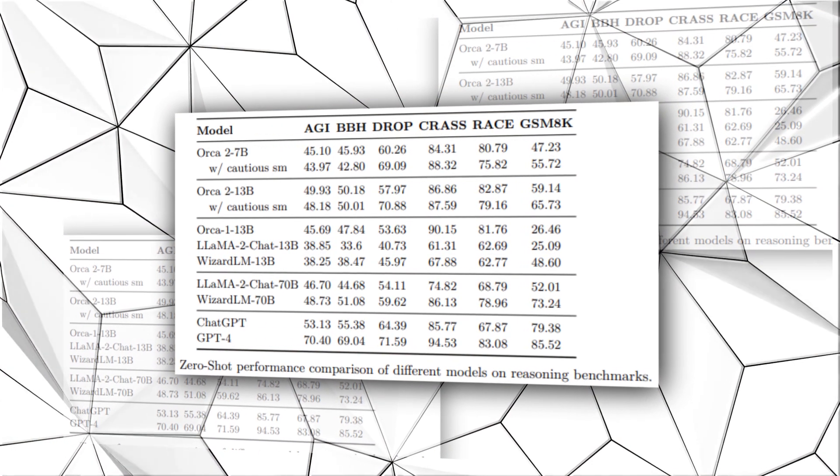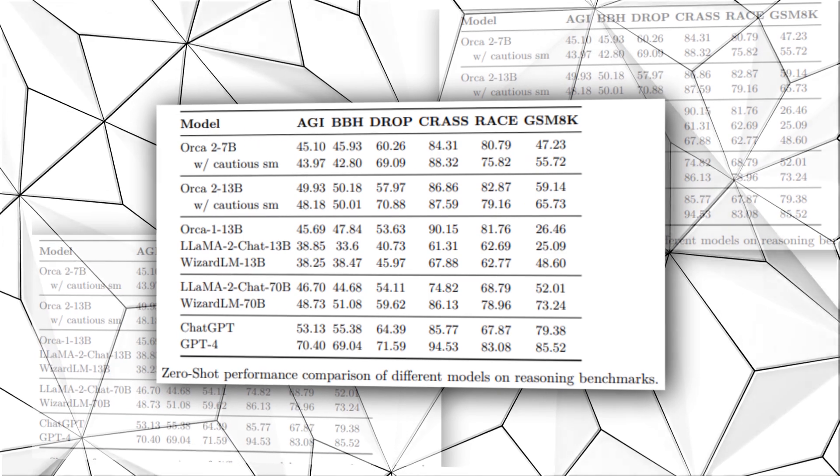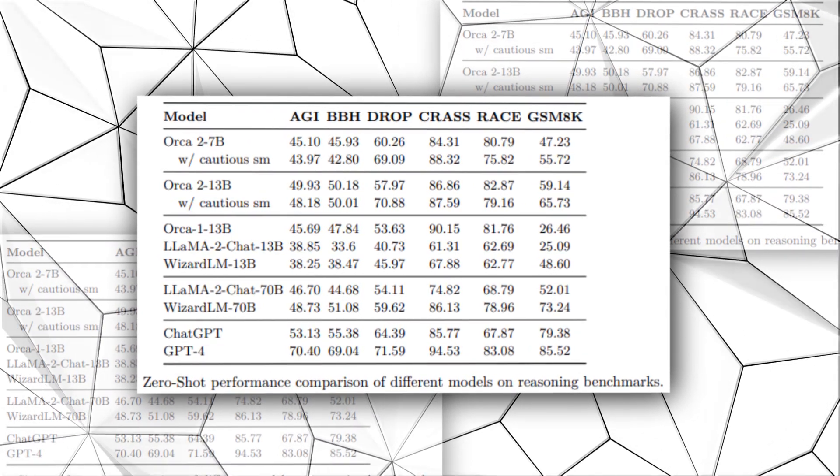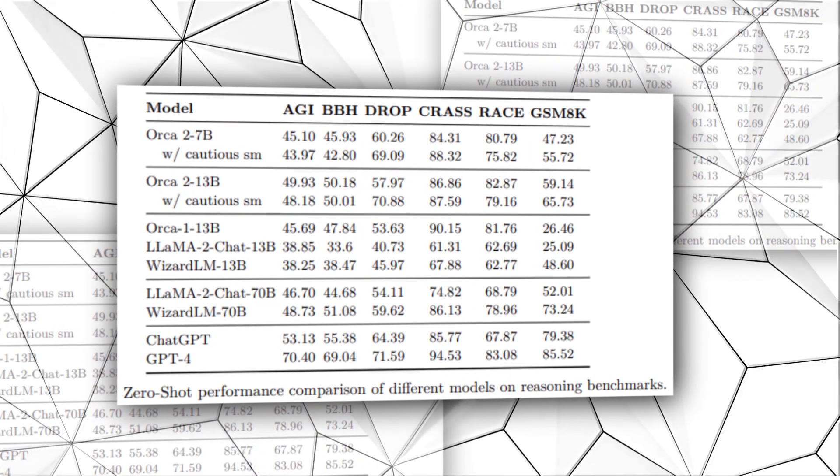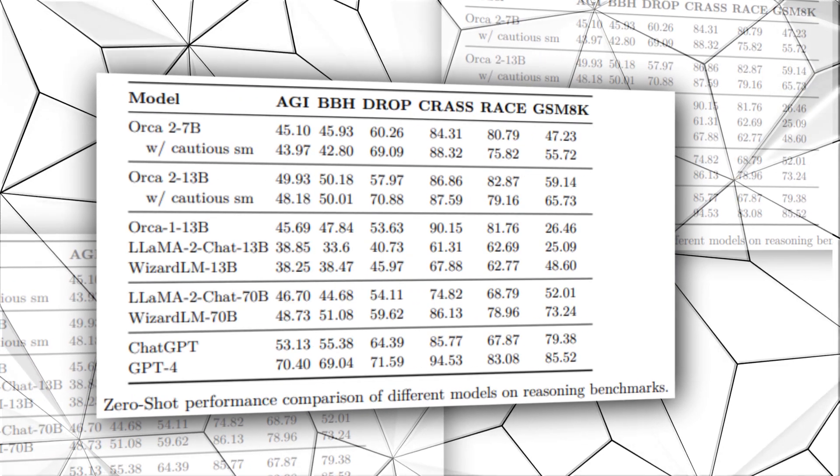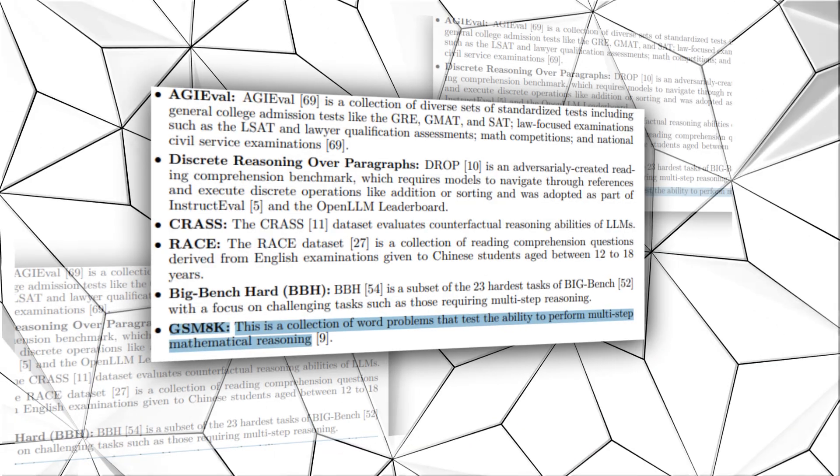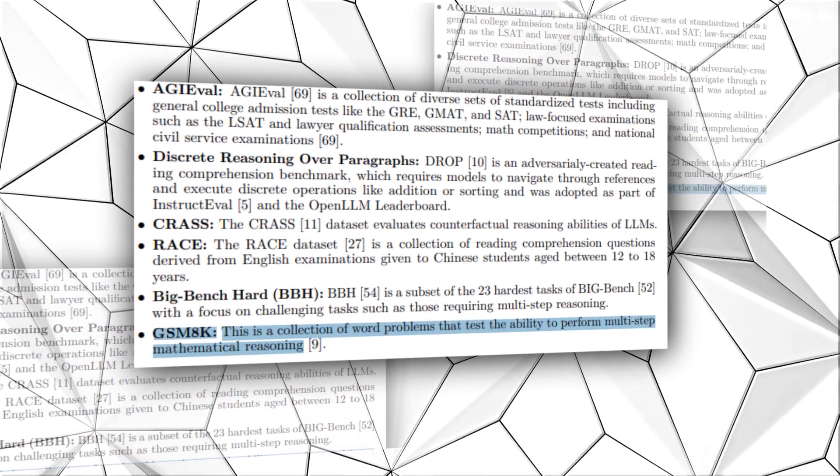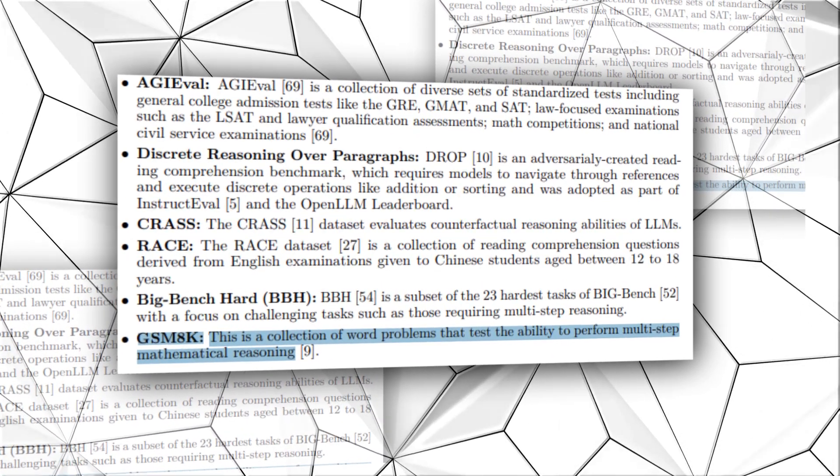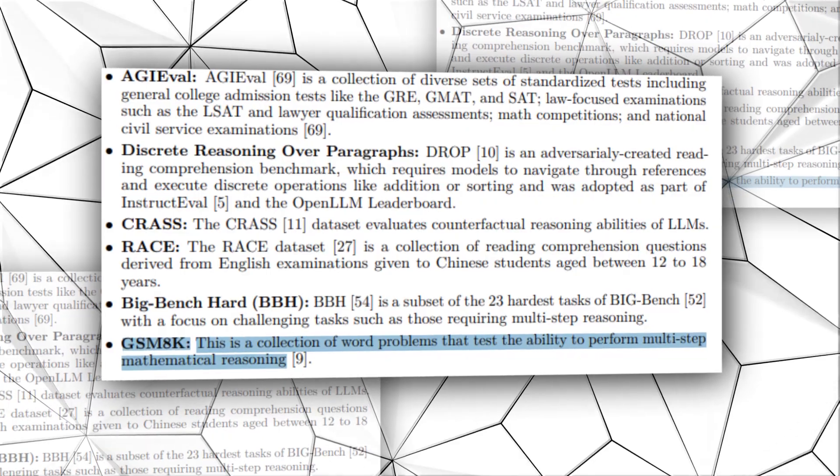Zero-shot setting is a situation whereby an AI model encounters a particular kind of problem for the first time and has not been pre-trained on how to solve it. Orca 2 showed impressive arithmetic reasoning capabilities when tested with mathematical word problems. It was evaluated using a data set containing over 8 million brain-wracking math word problems called the GSM-8K. The difficulty level of the quizzes in this library is set to a middle schooler standard.